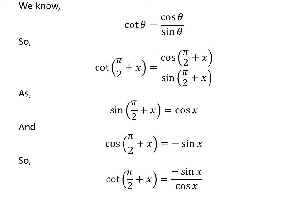Applying the above identities in the expression of cotangent of half of pi plus x gives us cotangent of half of pi plus x is equal to minus sin of x upon cosine of x. We know sin of x upon cosine of x is equal to tangent of x. So cotangent of half of pi plus x is equal to minus tangent of x.